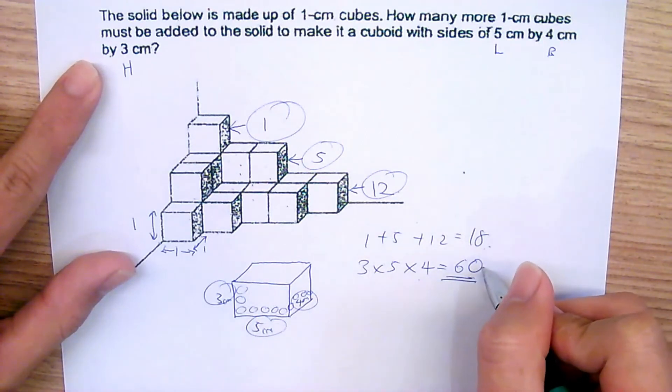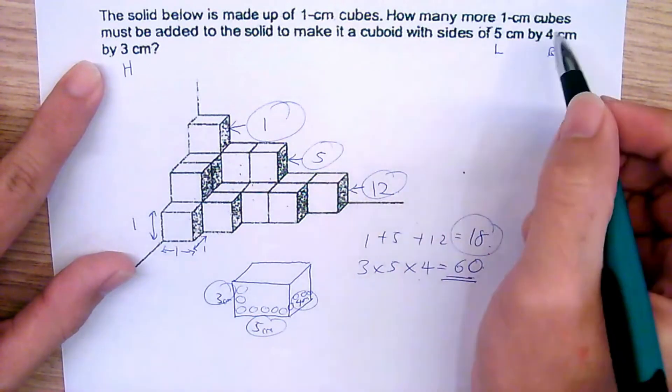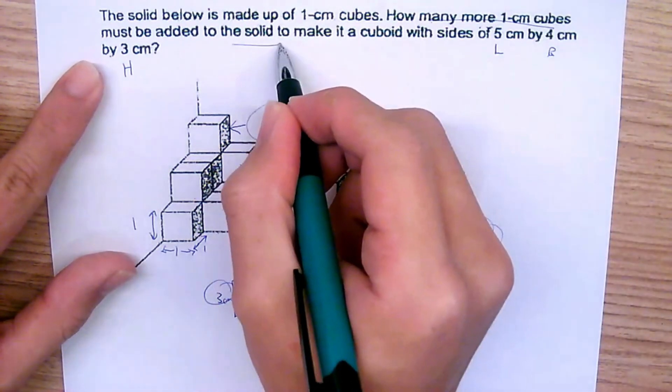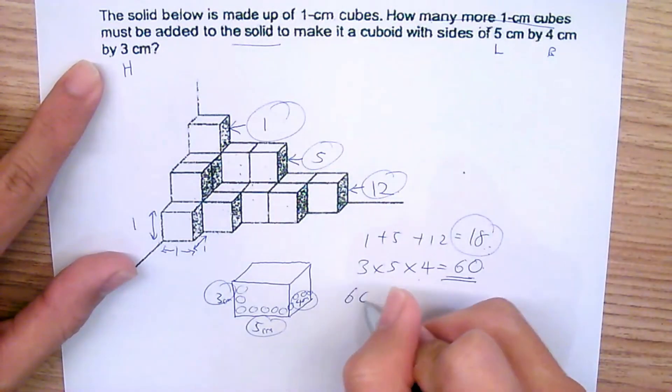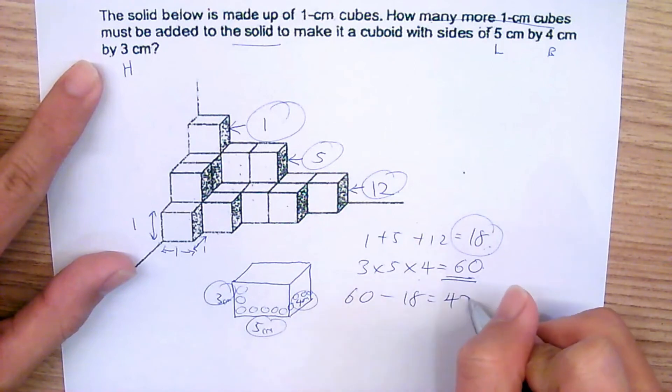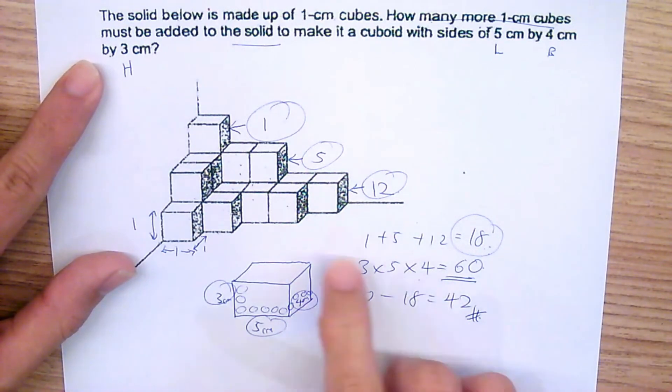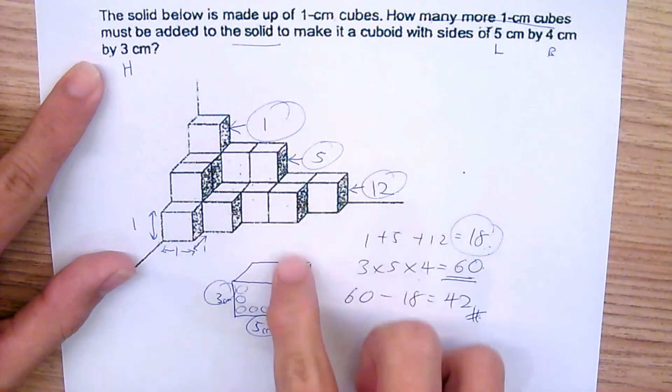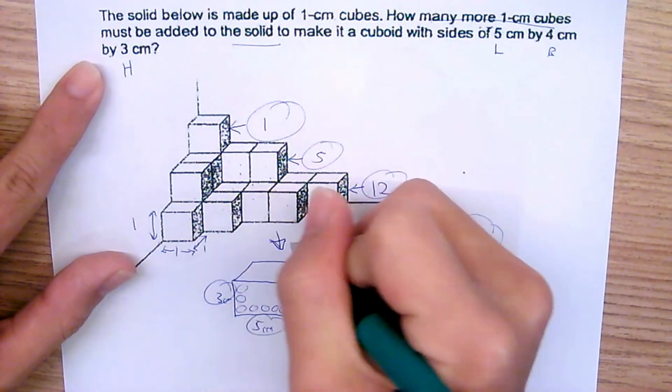Inside this box you can put 60, but there's only 18 inside. So they're asking how many more 1cm cubes must be added to this solid. Just take 60 minus 18, which will give us 42, and that will be the number of 1cm cubes that should be added to make this. Done.